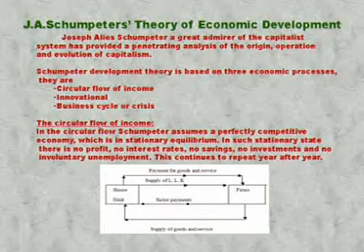In monetary terms, for example, if 100 crores worth of goods are produced, there are 100 crores worth of factor payments. The firms supply goods and services to the households, for which they receive payments. So suppose 100 crores is kept on rotating between the households and the firms every year — this continues to repeat year after year. Schumpeter calls this a stationary state in a circular flow of income.